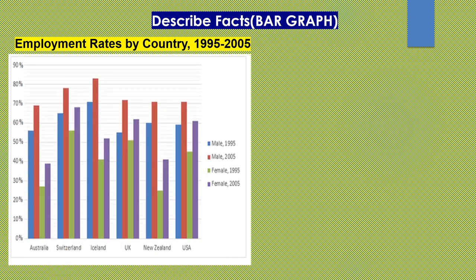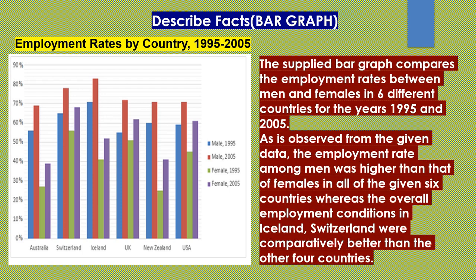Now let's take a look at the bar graph which shows the employment rates by country from 1995 to 2005. Here I'm going to share a sample answer that can help you score a good band. The supplied bar graph compares the employment rates between men and females in six different countries for the years 1995 and 2005.